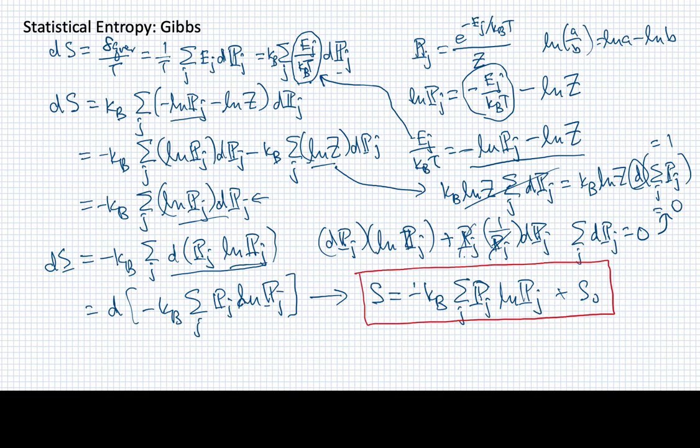So now it tells me that I have an expression here that tells me what the entropy might be for a system in terms of its state probabilities in that system. This was a formulation originally due to Gibbs in the 19th century, and so we'll call it the Gibbs formulation of statistical entropy.